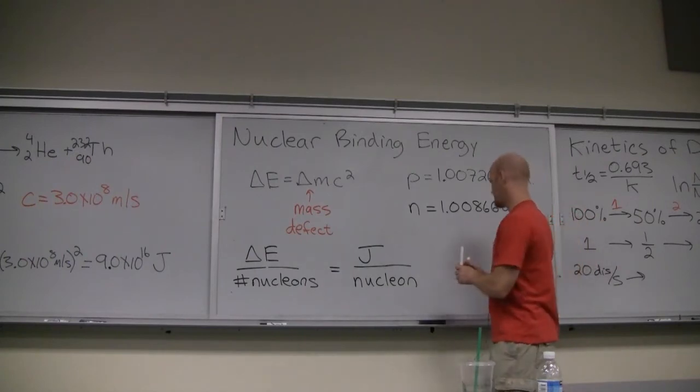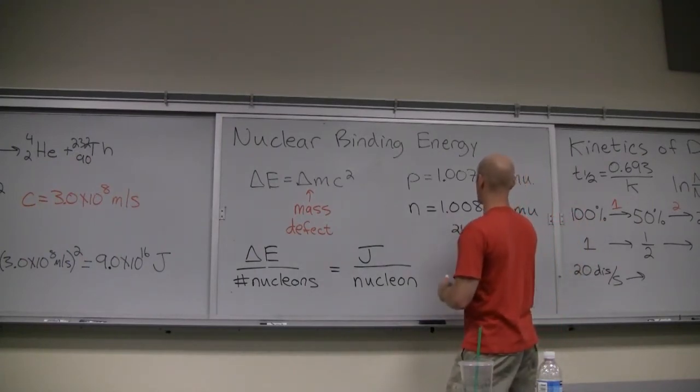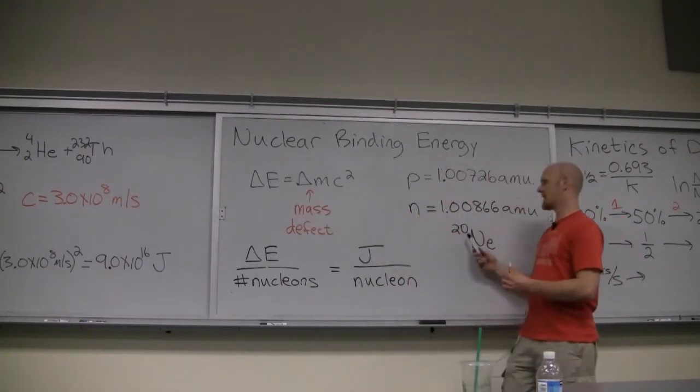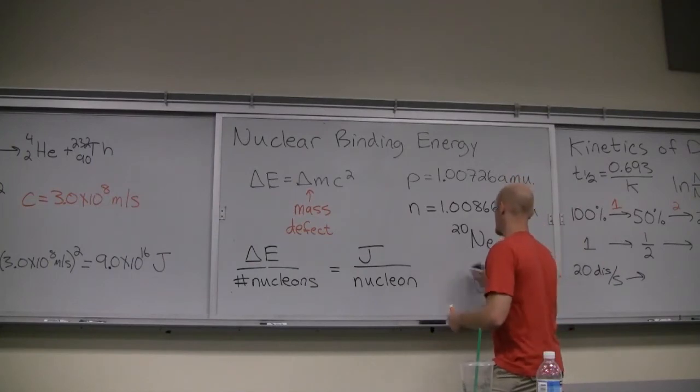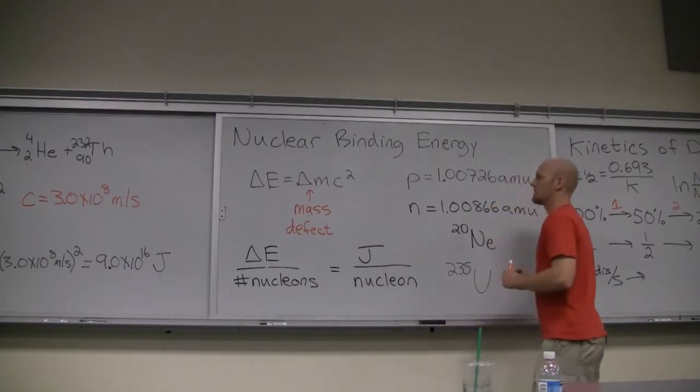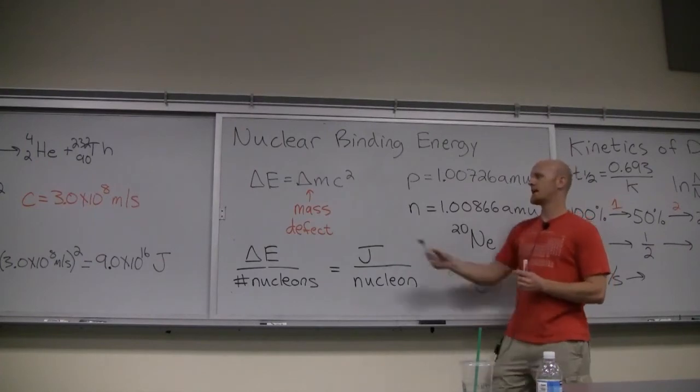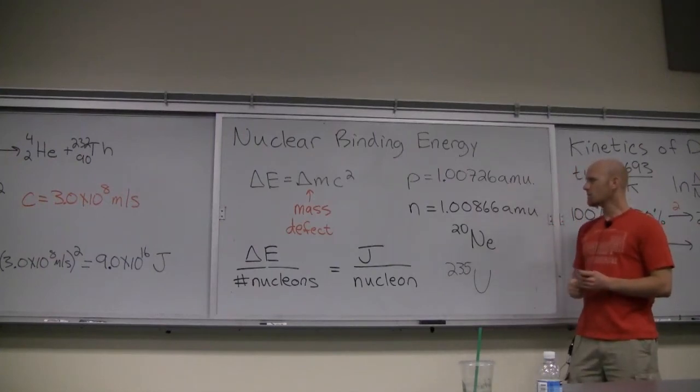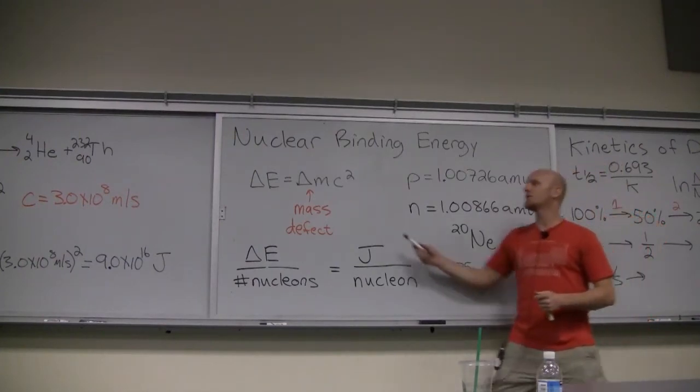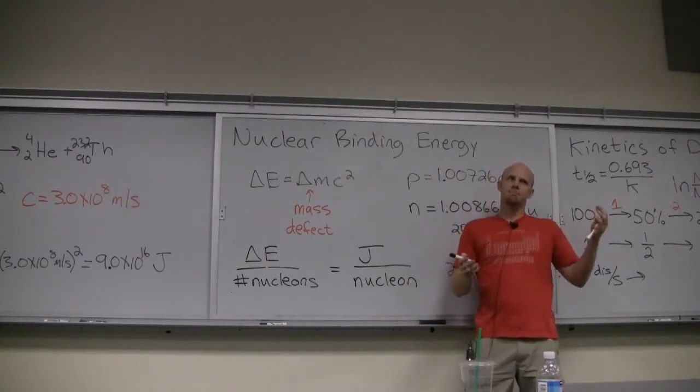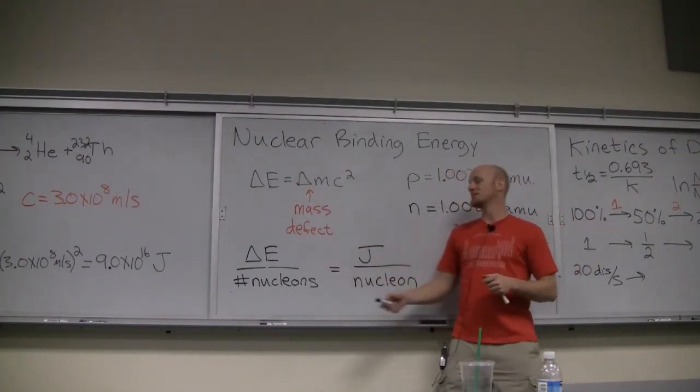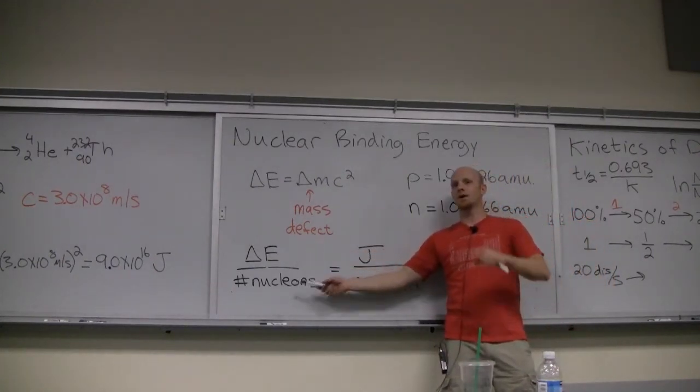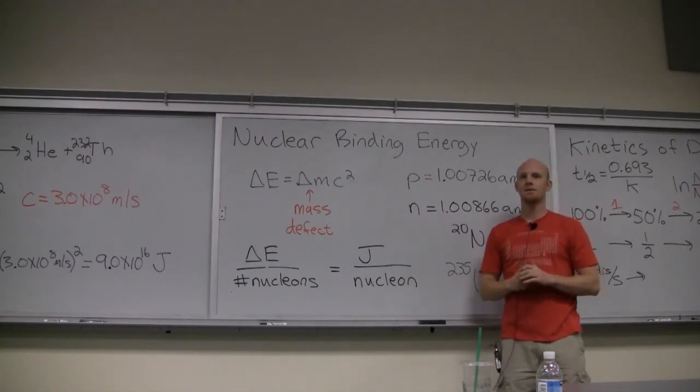So in the case of neon-20, I'd find delta E and then divide by 20. In the case of uranium-235, I would find delta E and divide by 235. So uranium definitely has a bigger delta E, way more nucleons, bigger delta E. But once I do it on this comparison, it turns out neon is more stable and has a higher nuclear binding energy per nucleon. Can you just repeat what you said about the stability compared to that? If delta E over nucleons is bigger, then it's more stable or less stable? Correct. The bigger the nuclear binding energy per nucleon, the more stable.